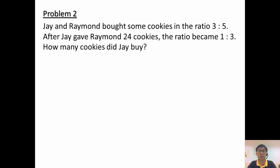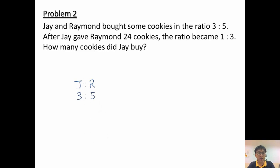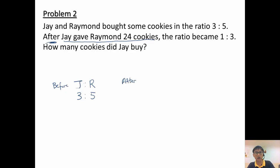Now question two. Jay and Raymond bought some cookies in the ratio of 3 to 5. After Jay gave Raymond 24 cookies, the ratio became 1 to 3. How many cookies did Jay buy? We are again comparing Jay to Raymond with ratio 3 to 5. This time, Jay gave Raymond 24 cookies. So I have a before ratio and, because of the word 'after', I need an after ratio. After, Jay to Raymond is 1 to 3.